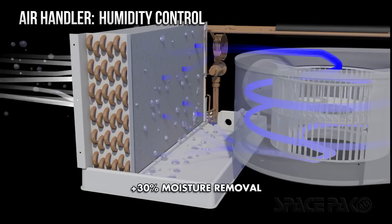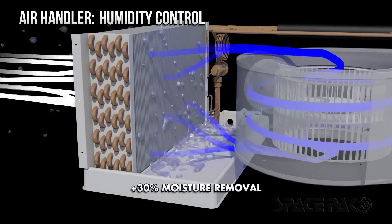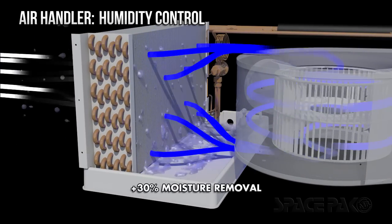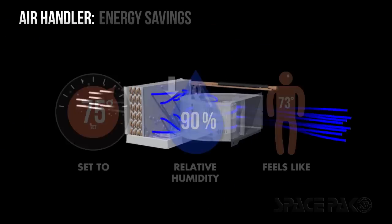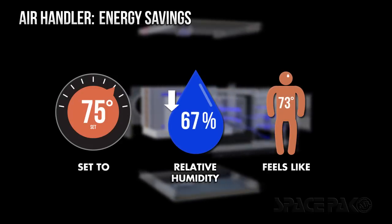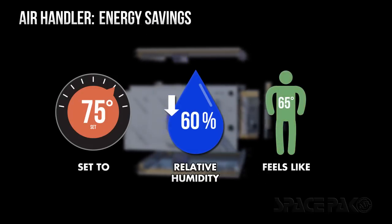When cooling, a SpacePak system removes humidity from the air to make your living space feel even cooler than traditional air conditioning. SpacePak removes 30% more moisture than a traditional system, which allows you to set the thermostat higher, feel cooler, and save by using less energy.